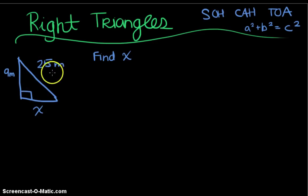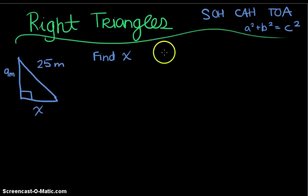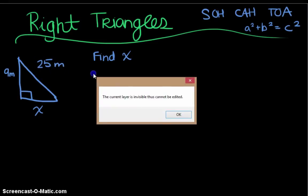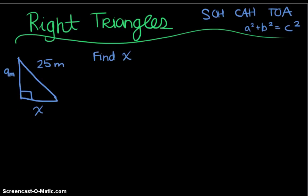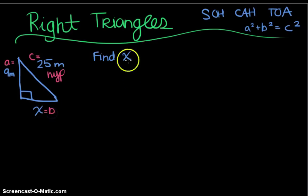For the first example, we have a right triangle where the hypotenuse is given as 25 meters, one leg in the vertical is given as 9 meters, and we're missing the horizontal leg x. This is a simple Pythagorean theorem problem. I know the hypotenuse is 25 meters, so I'll call that c. The 9 meters is a, and x is b.